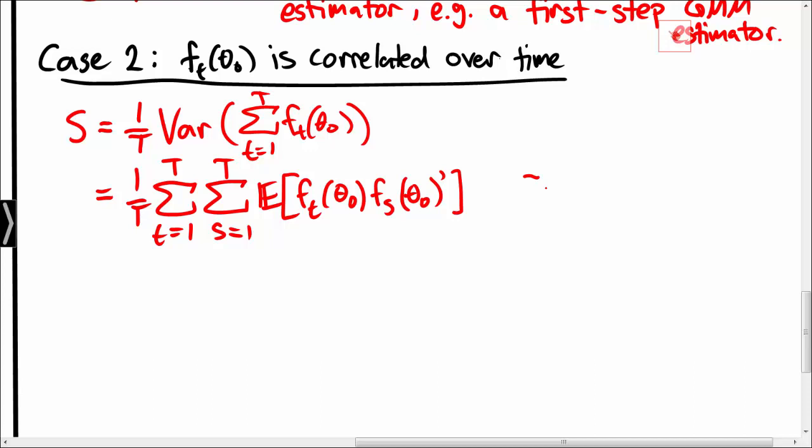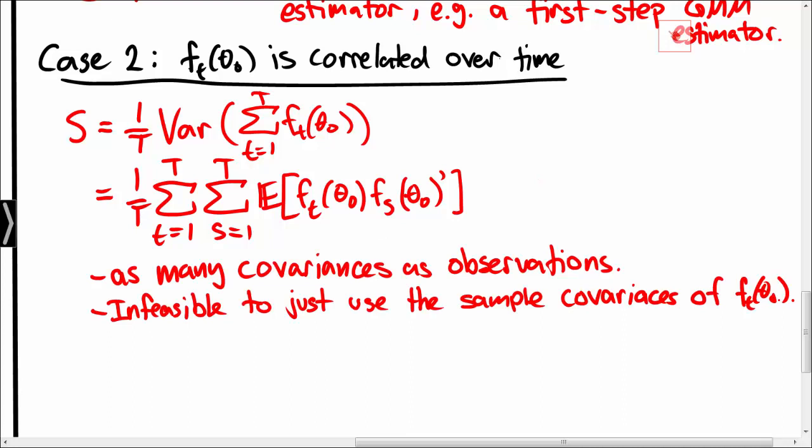We note here that we have just as many covariances as we have observations, and the number of covariances will increase by the number of observations. This means that in practice it will be infeasible to estimate the variance S just based on sample covariance matrices.